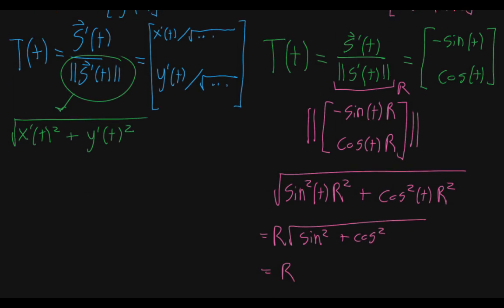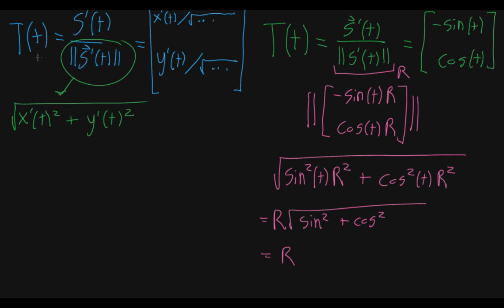Now what we want, once we have the unit tangent vector as a function of that same parameter, is the derivative of that unit tangent vector with respect to arc length s, and to find its magnitude. That's going to be what curvature is.